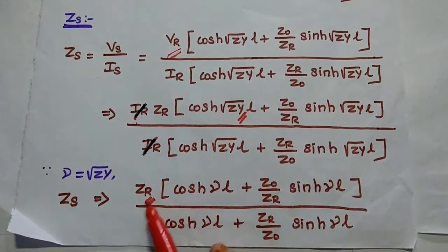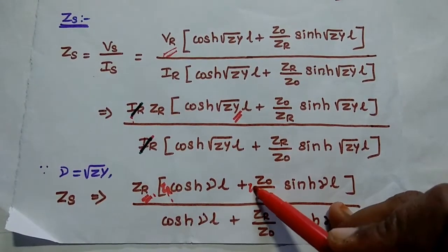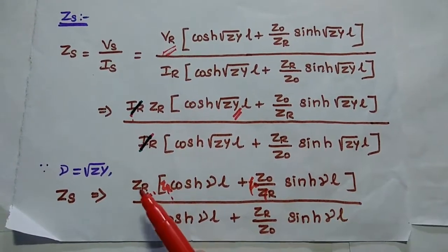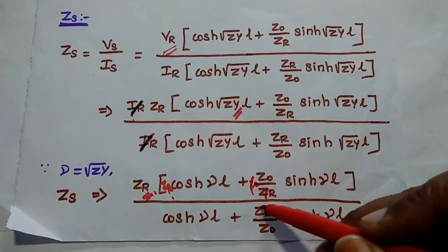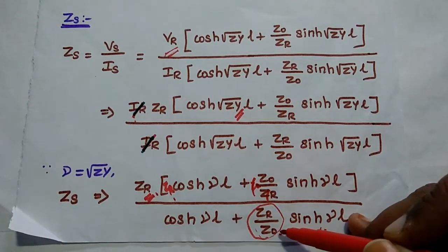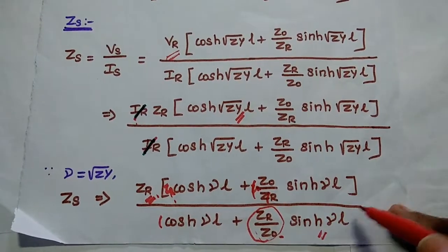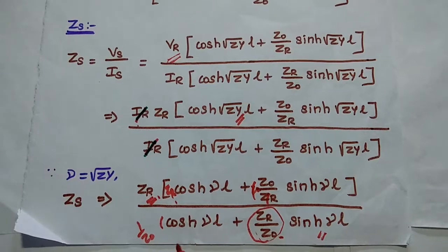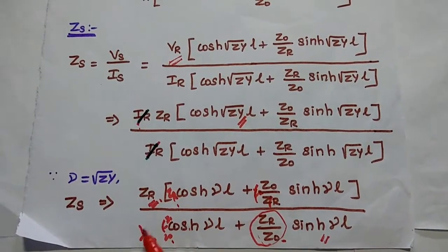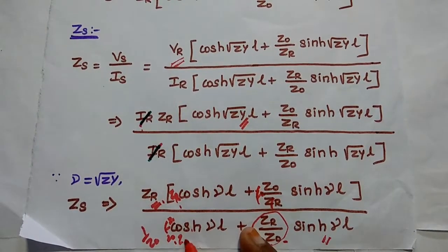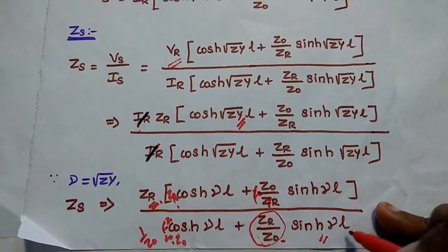In the next step, we multiply Zr into the bracket. In the denominator, we have Zr by Z0. We take out the Z0 value — we take out 1 by Z0 from the denominator. Then this term becomes Z0 cosh(γl) plus Zr sinh(γl). Understood?